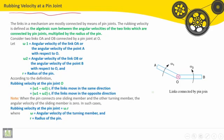We have links connected by pin joints: Link OA, Link OB, connected by a pin joint here. The links in a mechanism are mostly connected by means of pin joints. The rubbing velocity is defined as the algebraic sum between the angular velocities of the two links which are connected by pin joints, multiplied by the radius of the pin.